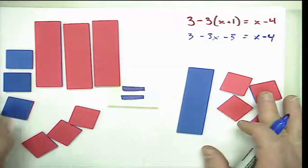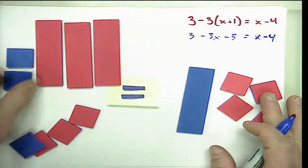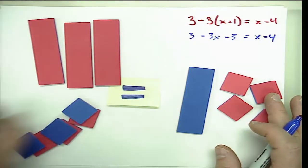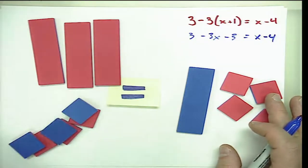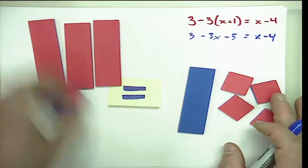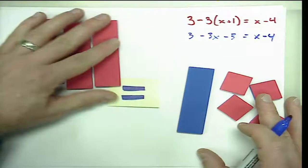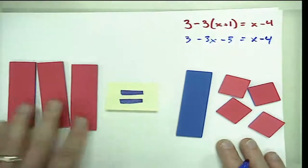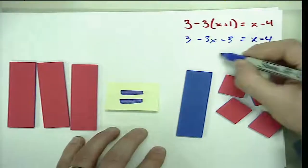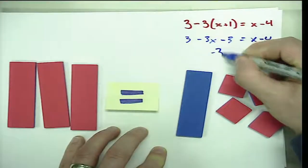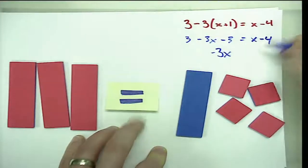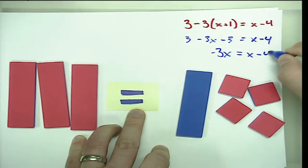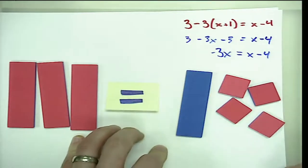Right away on the left-hand side we see zero pairs, so we can simplify by combining like terms. The three and negative three cancel, and we're left with negative three X is equal to X minus four.